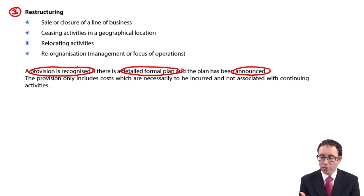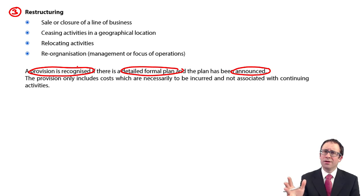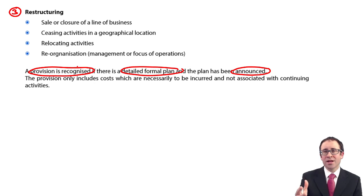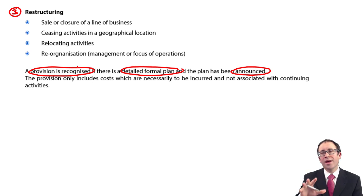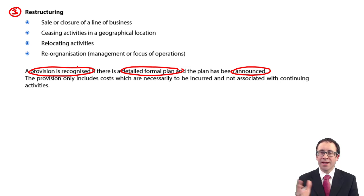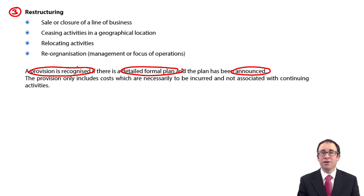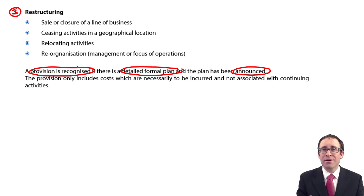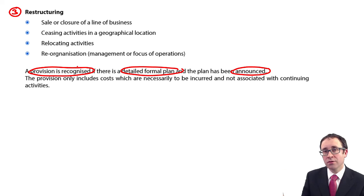However, be careful: you can only provide for the costs of closure, not anything to do with continuing activities. For example, implementing new computer systems would not qualify because those help continuing activities. There is a risk that finance directors try to include as many costs as possible to clear the negative impact of closure in one go — watch out for overstated provisions used to 'clear out the rubbish' so the future looks clean. That covers the specifics on provisions. The onerous contract example was challenging, but exam questions are unlikely to be as difficult — focus on the easier parts first.